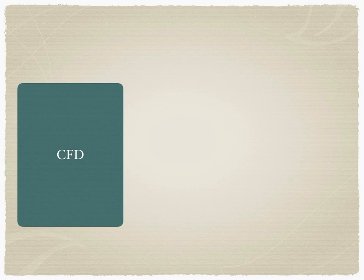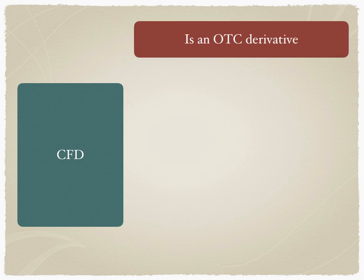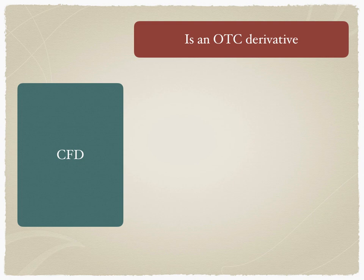A CFD is an OTC derivative. OTC means over the counter, which implies it is a structured product entered into between two parties. One party to the trade is the hedge fund, and the counterparty is called the CFD provider. In most cases, the CFD provider is a prime broker. So this is a bilateral contract between the hedge fund and the CFD provider.